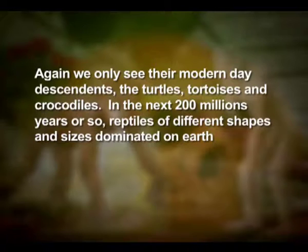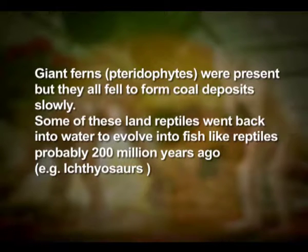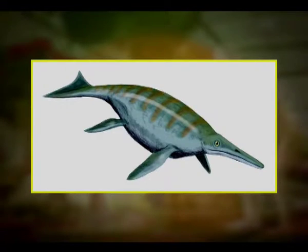In the next 200 million years or so, reptiles of different shapes and sizes dominated the earth. Giant ferns, the pteridophytes, were present and they fell to form coal deposits slowly. Some of these land reptiles went back into the water to evolve into fish-like reptiles, probably 200 million years ago — for example, Ichthyosaurus. The land reptiles were, of course, the dinosaurs.